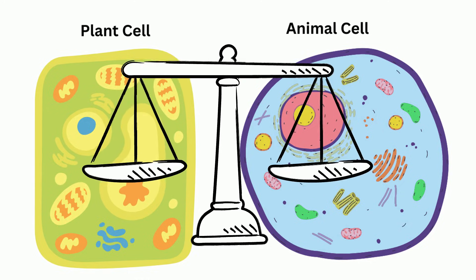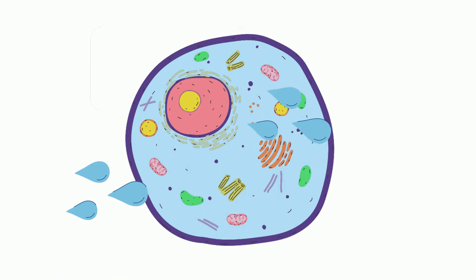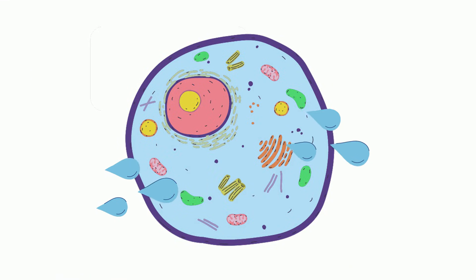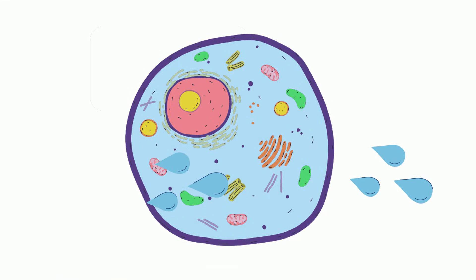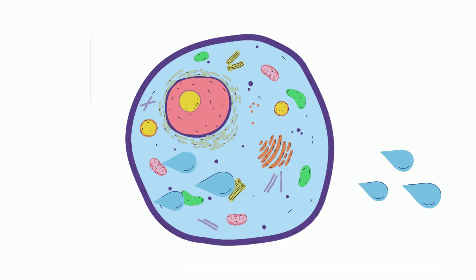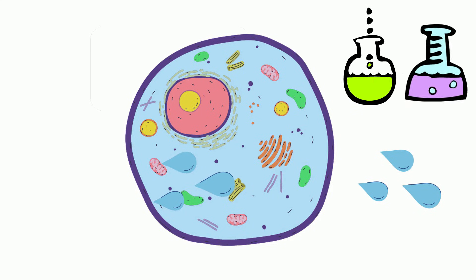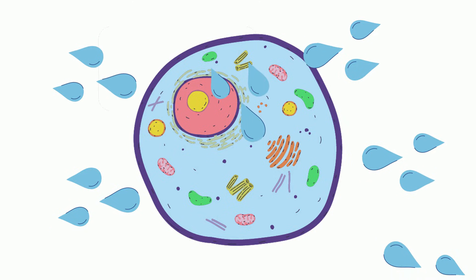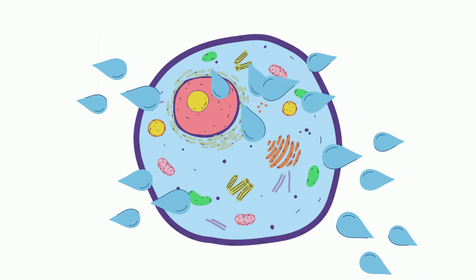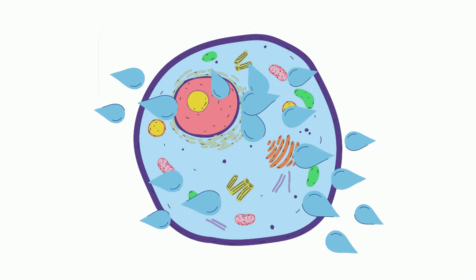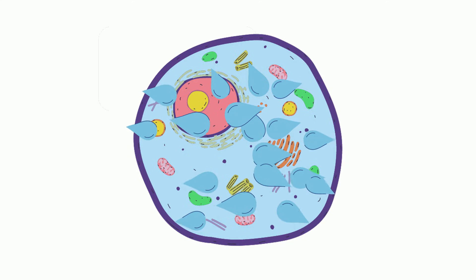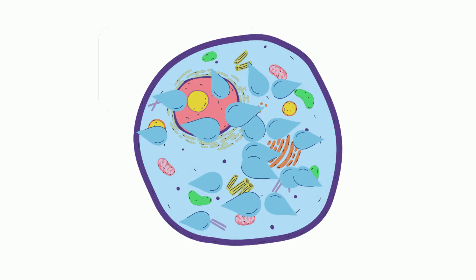For example, in homeostasis, an equal amount of water flows into the cell and out of the cell. The cell maintains its shape and has enough water to carry out chemical reactions. However, if the environment has more water than the cell, the cell will be out of homeostasis. Water will rush into the cell, and with animal cells, they can even burst from this.